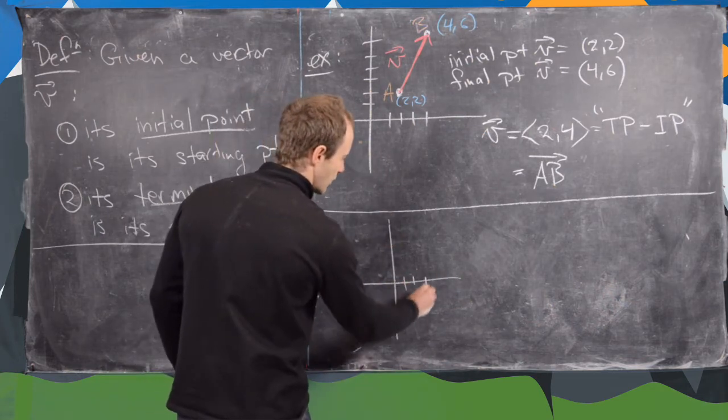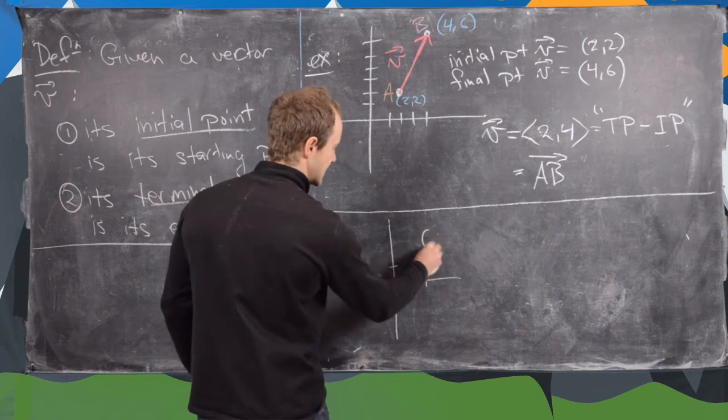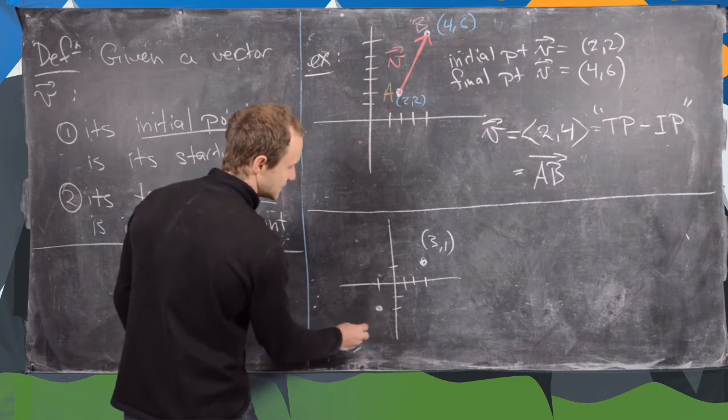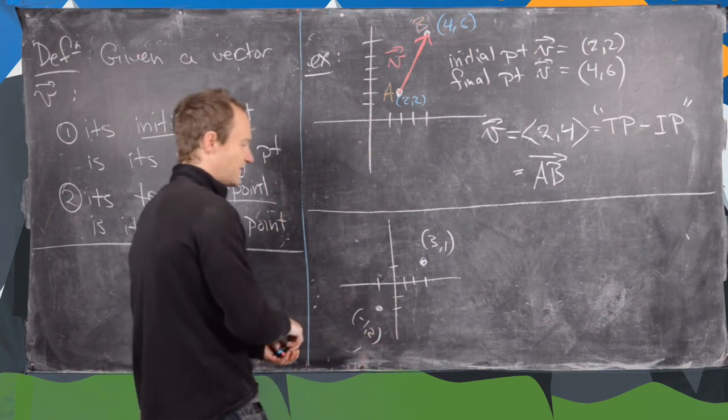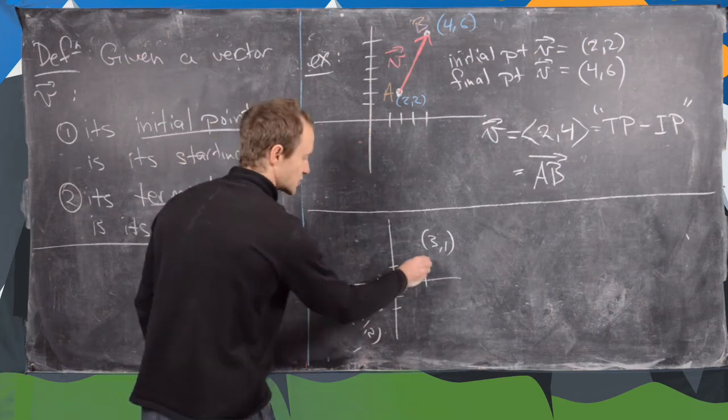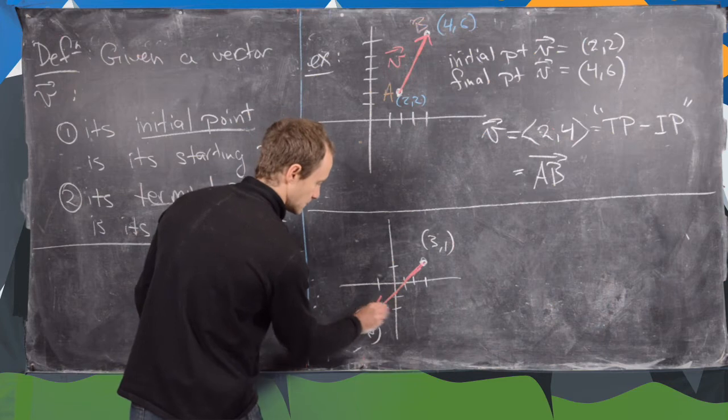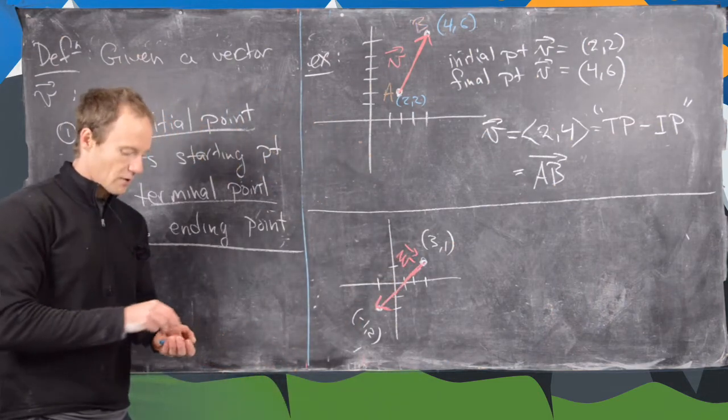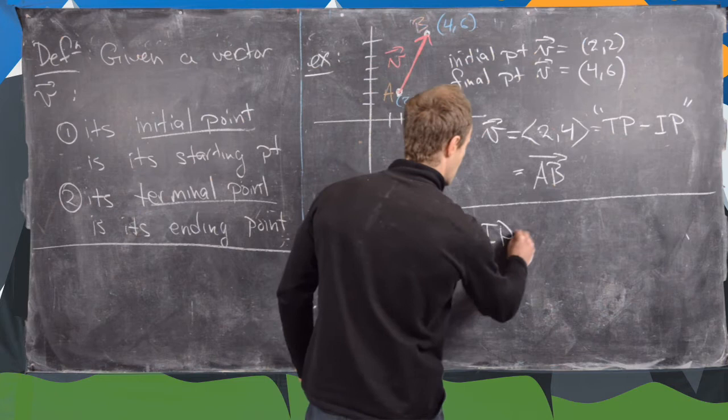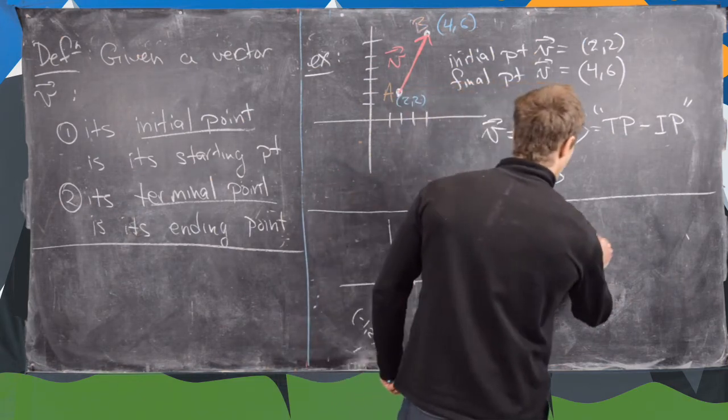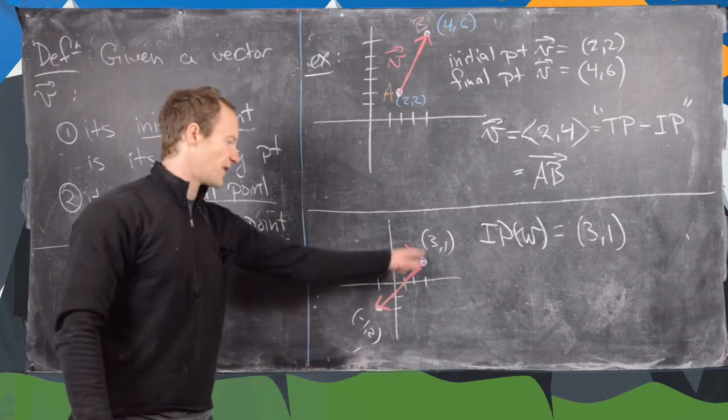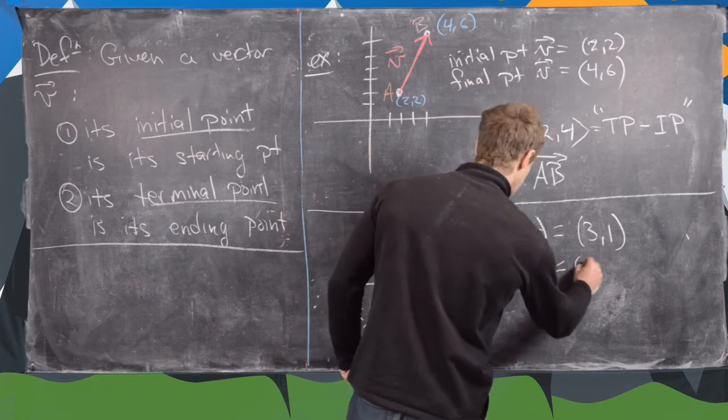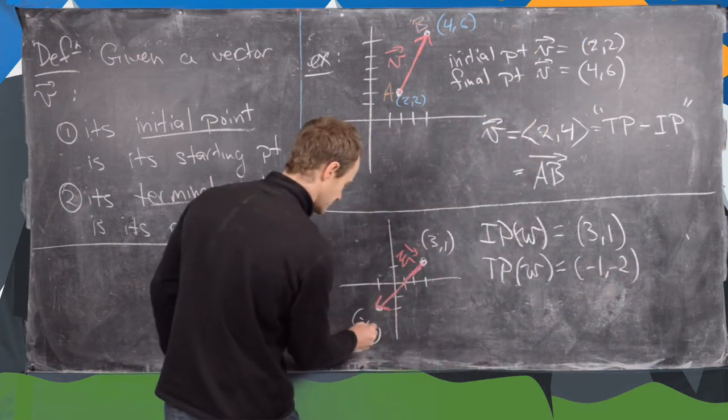Let's say we have this point (3,1), and then maybe this point down here, (-1,-2). And let's say our vector, in this case, is going in this direction. Let's maybe call this vector W. Notice that we could say the initial point of W is equal to (3,1) in this case, because we put the arrow going down and left. And then the terminal point of W is equal to (-1,-2) in this case.